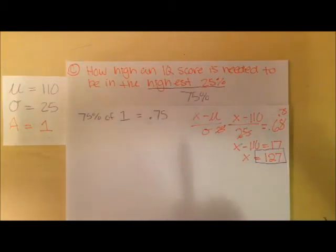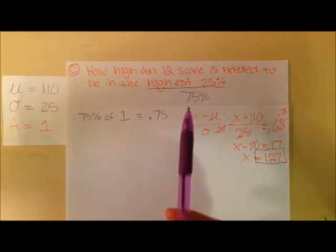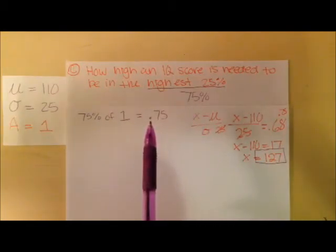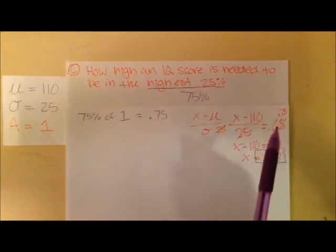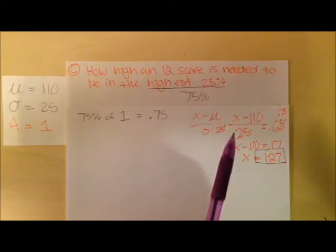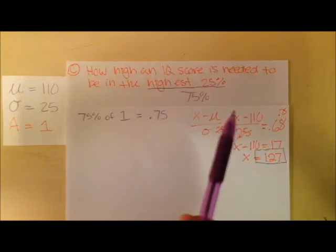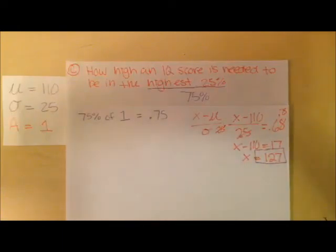Just a quick recap of how we did this. We took the 75%, turned it into a proportion, plugged that into our table, and got a Z score of 0.68. And from there, we solve backwards using the equations we used in points A and B. And that gave us an X value of 127. And that completes question one.